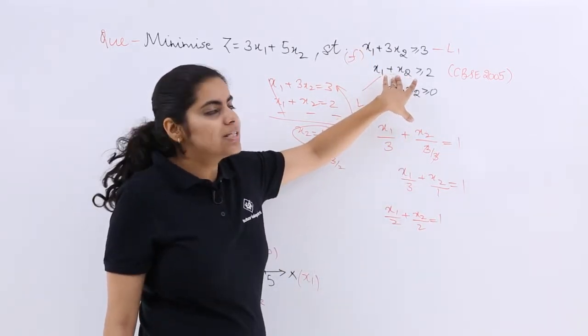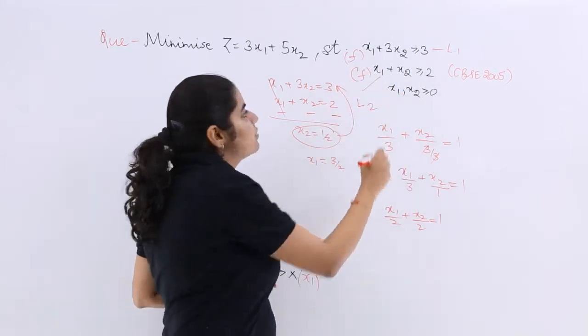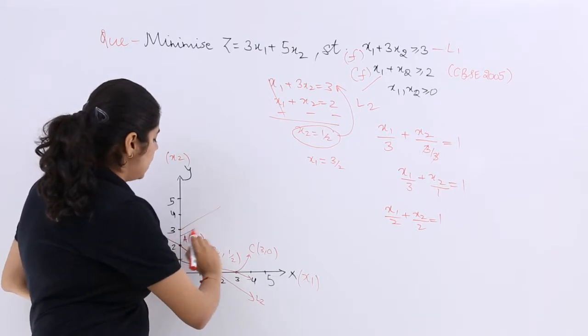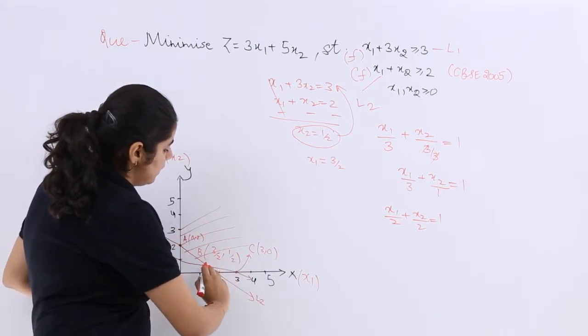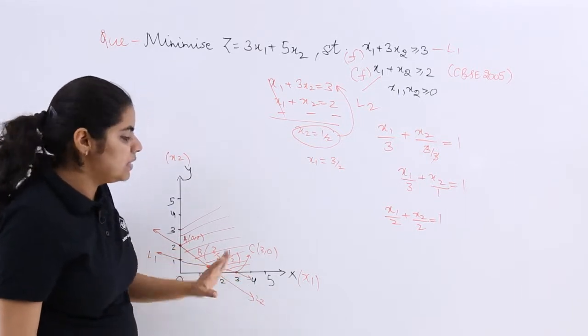If I put here, 0 plus 0, 0 greater than or equal to 2. False. Means doesn't satisfy. So away from the origin. Away from the origin means this very area. So the 3 intersection points A, B, C are there.